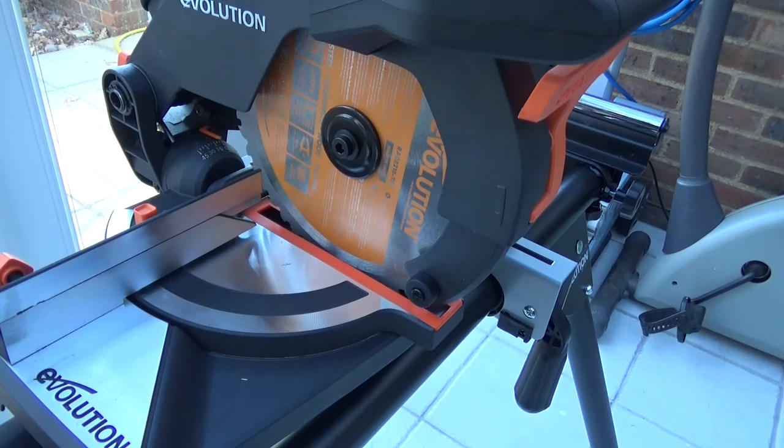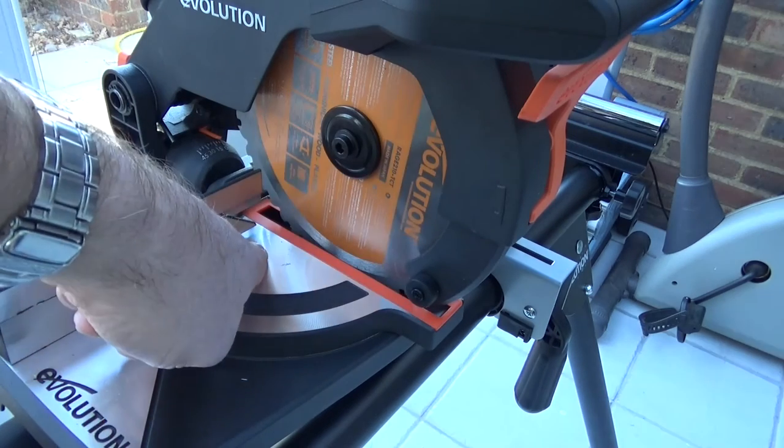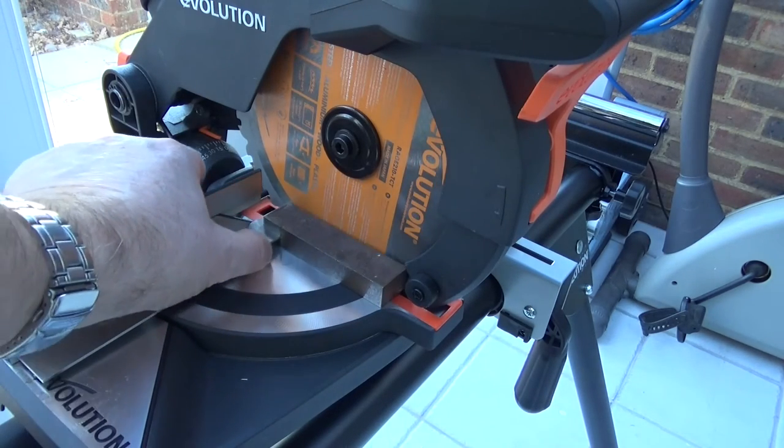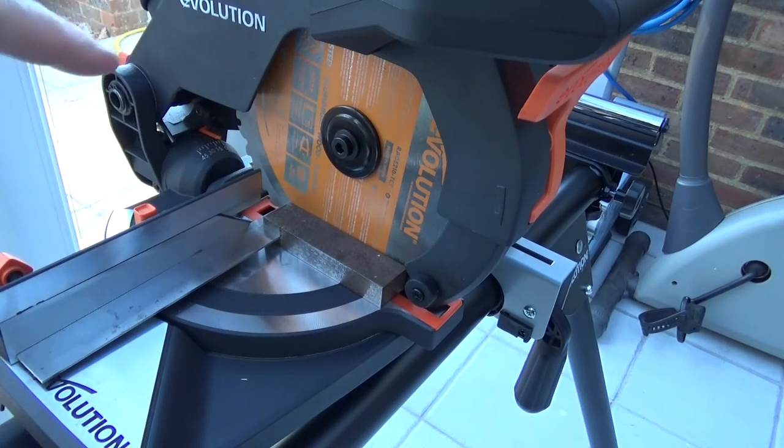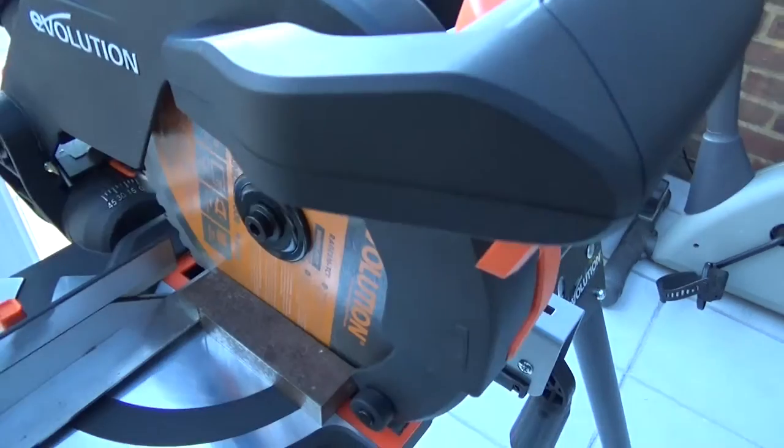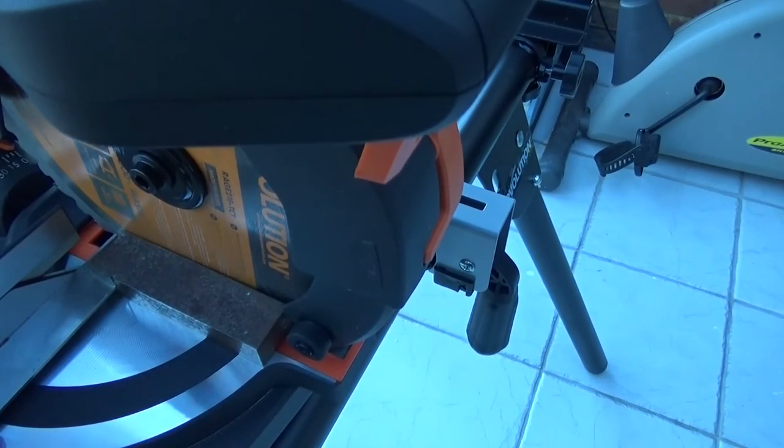Make sure it's unplugged. The first thing we're going to check is that the blade is at 90 degrees to the fence. Slide your set square along till it touches the blade, making sure it's not in contact with any of the tungsten carbide teeth. You can see there's a gap, so it's not at 90 degrees to the fence.